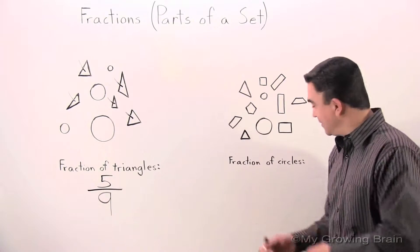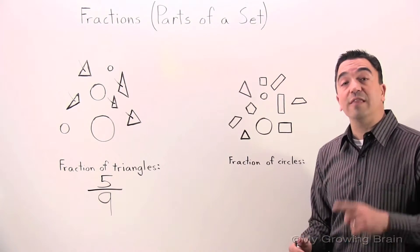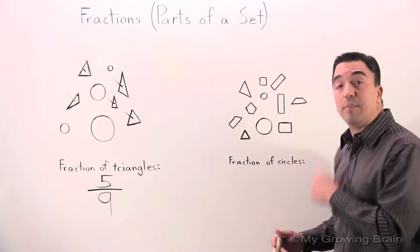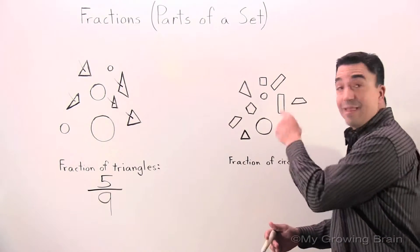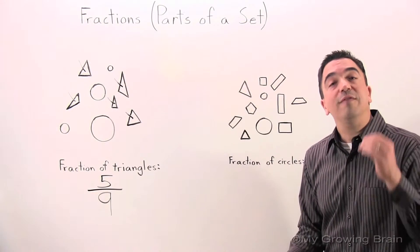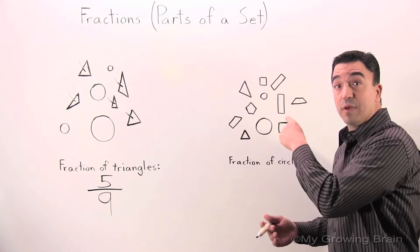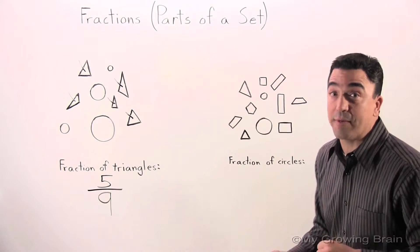Ta-da! Once again, we are going to find the fraction that represents the total number of circles in this set. So what do we do first? We have to find the denominator. We have to count all the shapes. And that will be our denominator. Let's do it.